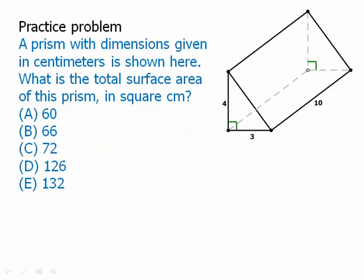Now, a different practice problem. Pause the video and then we'll talk about this one. A prism with dimensions given here in centimeters is shown. What is the total surface area of that prism? The total surface area — let's think about this. We have a triangle in the front, a triangle in the back, and then we have three rectangles.